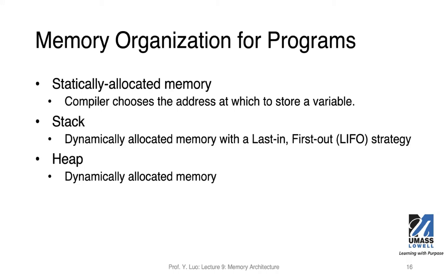Now let's talk about memory organization for programs — specifically the different ways to allocate and use memory. One way is statically allocated, where the compiler chooses the address at which to store a variable. For stack, it's dynamically allocated memory using a last-in first-out strategy. Heap is dynamically allocated memory managed for system applications.